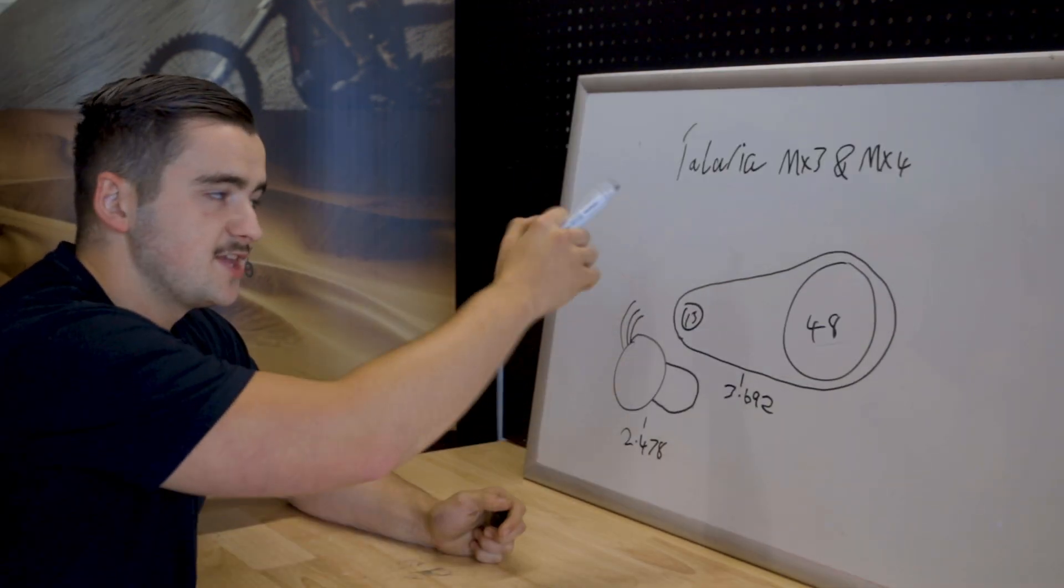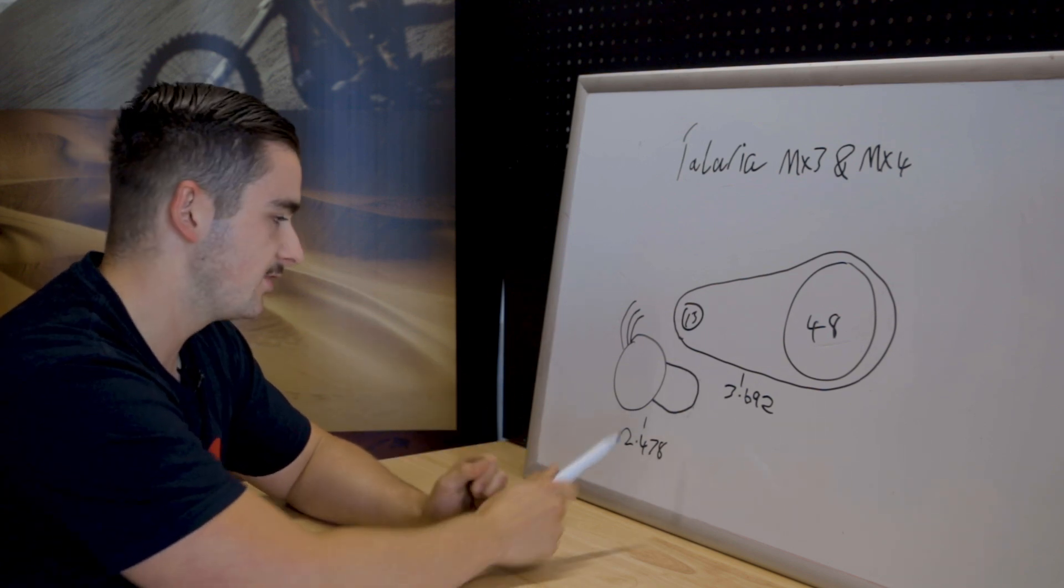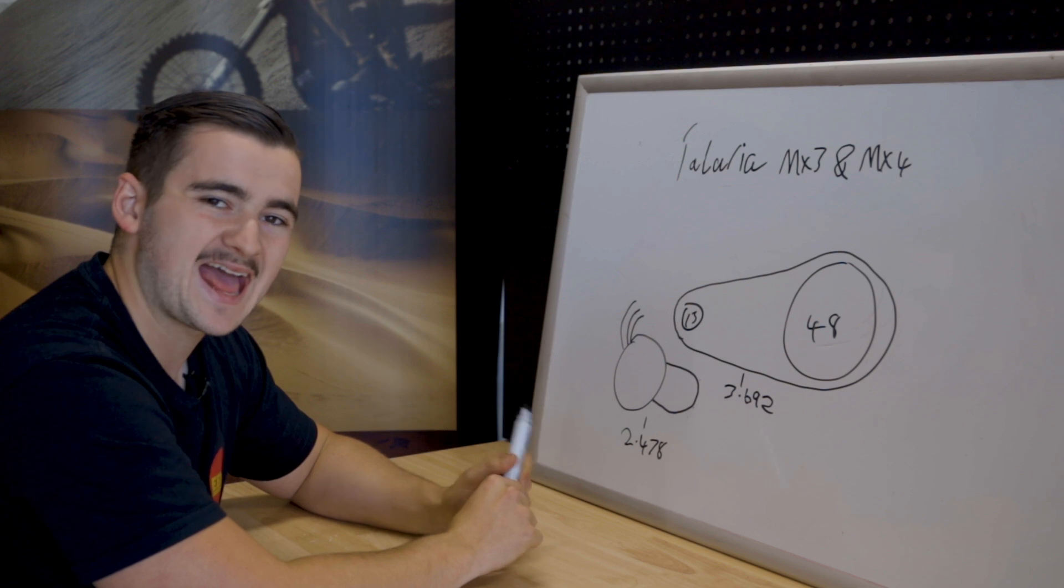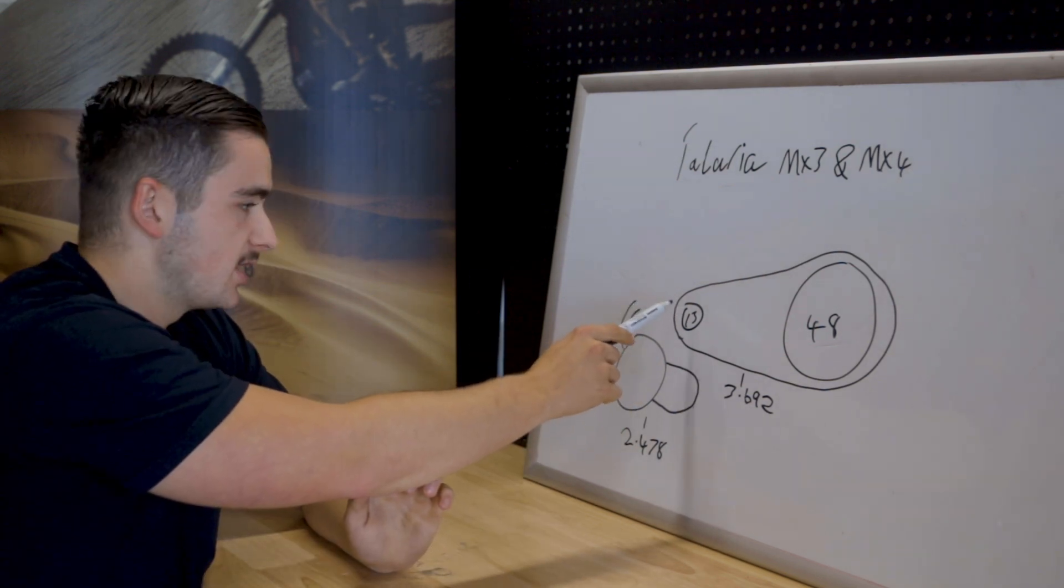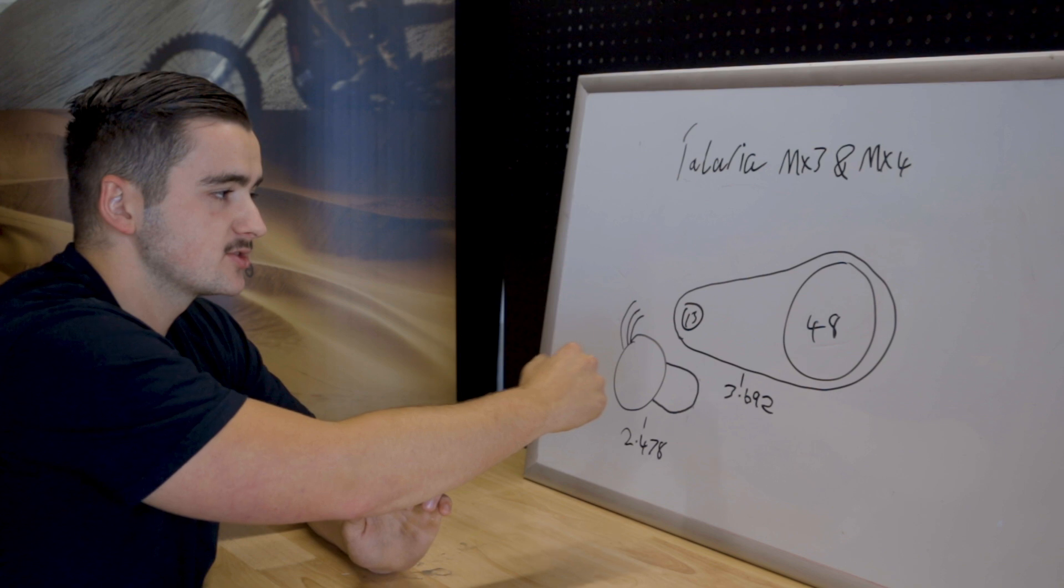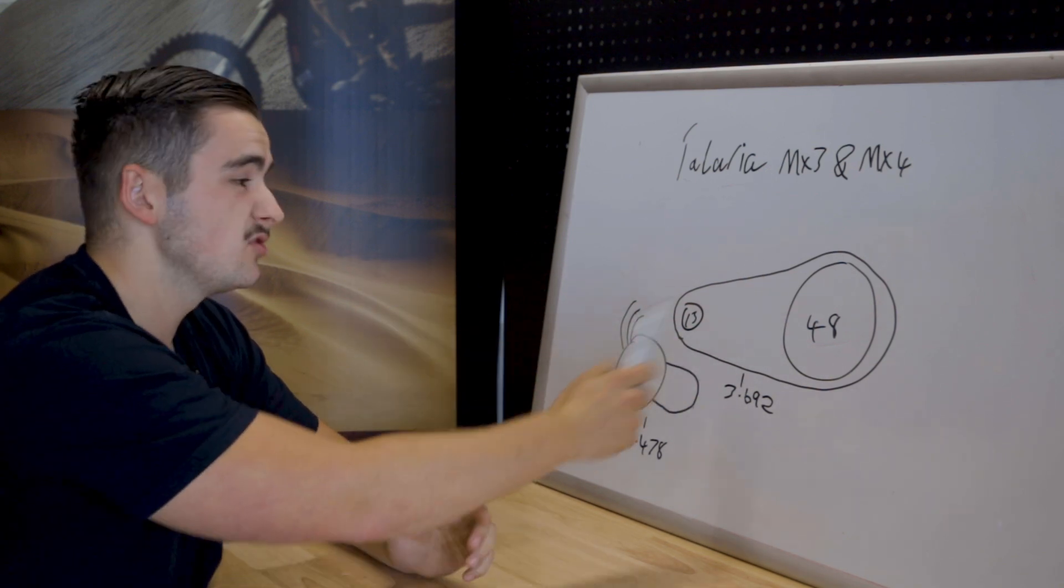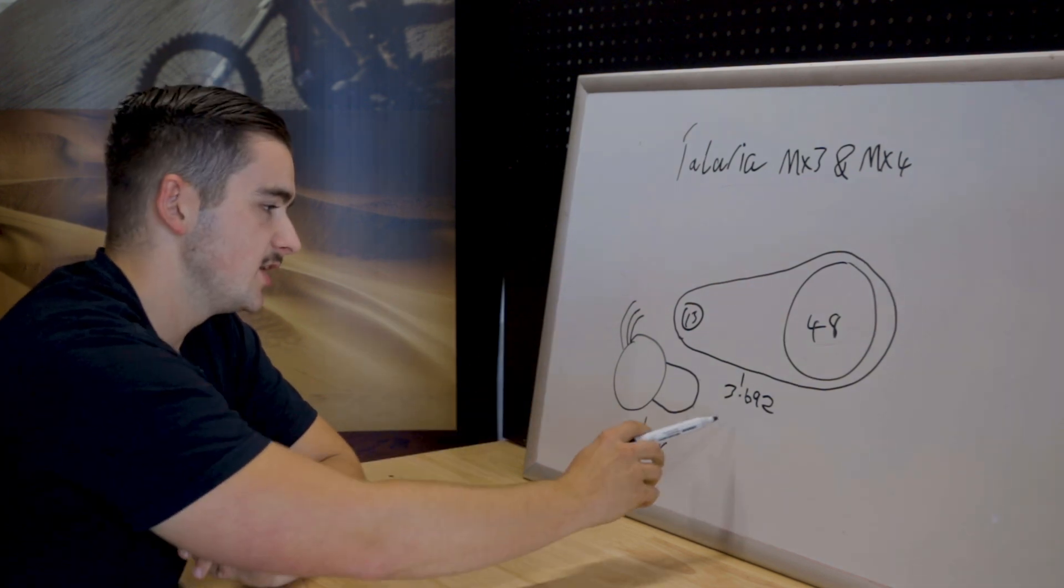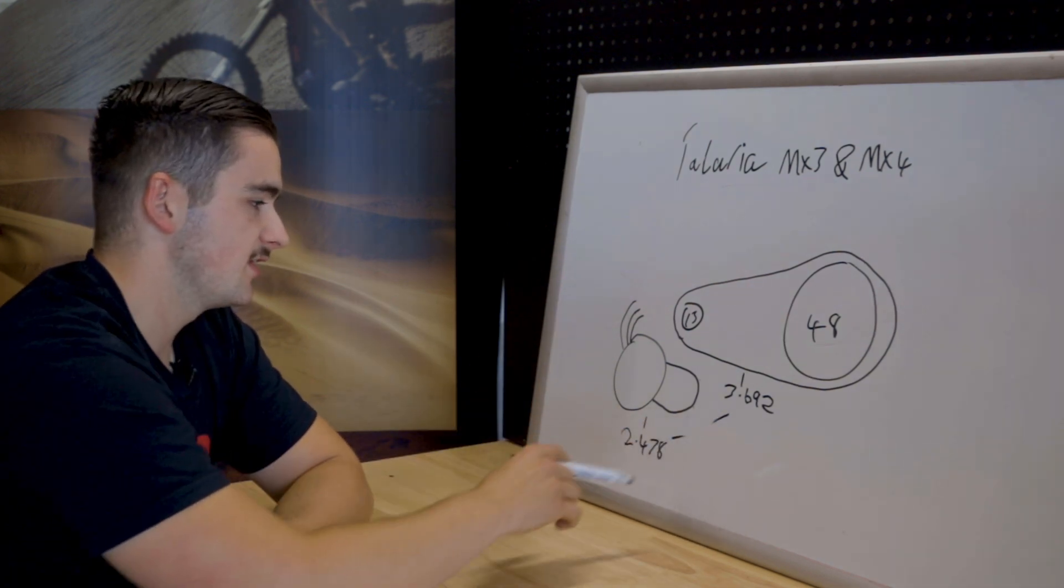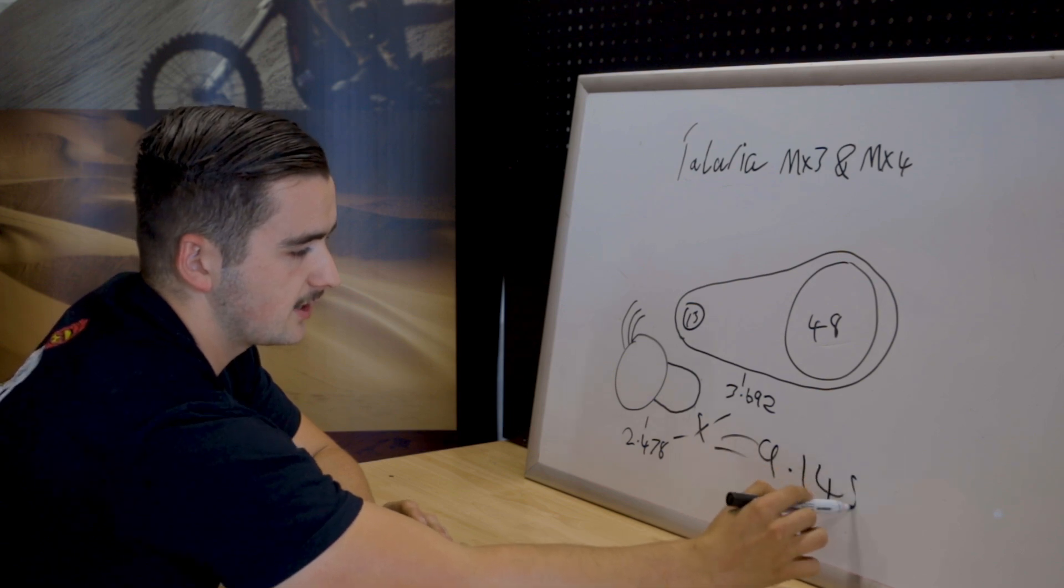So then on the Talaria, the MX3 and the MX4 you obviously have gearbox. Now that gearbox is 2.478. Let's say here's our 13 tooth sprocket that would come off our gearbox. Let's just say we're running a 48 tooth sprocket. For argument's sake you might not be but you now know how to calculate. So then once again we times these two together which equals 9.148.